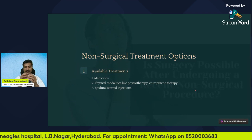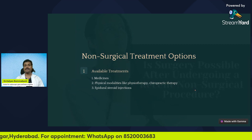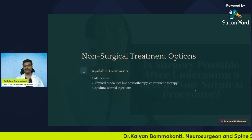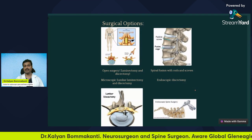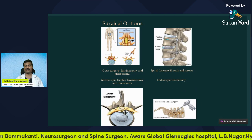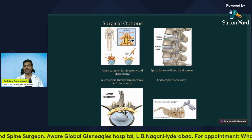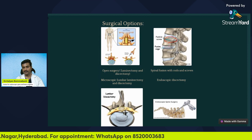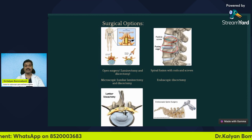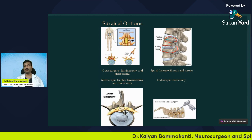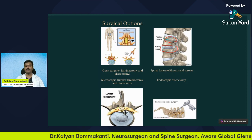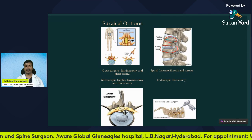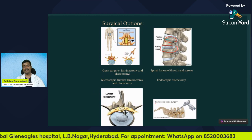If you are looking for a surgery, which surgical option to choose is very confusing — and it's confusing for many doctors and sometimes even for me — because we have many options. We have open surgery, which is laminectomy and discectomy. We have spinal fusion, which is laminectomy and discectomy with screws, rods, and cage. We have microscopic lumbar laminectomy and discectomy. We have endoscopic discectomy. Let us discuss which is the best option.